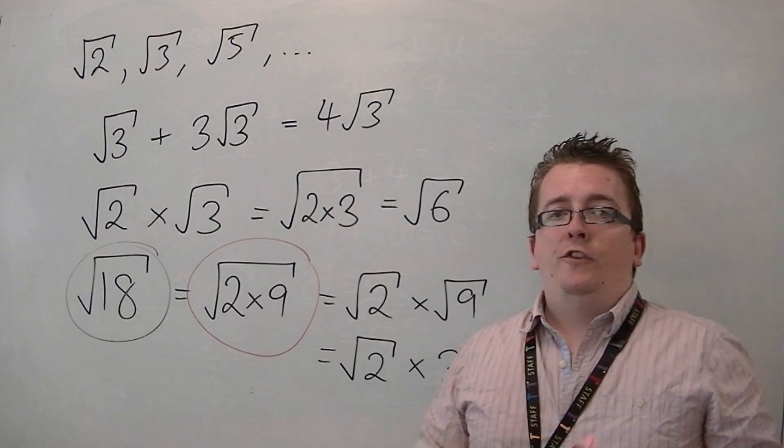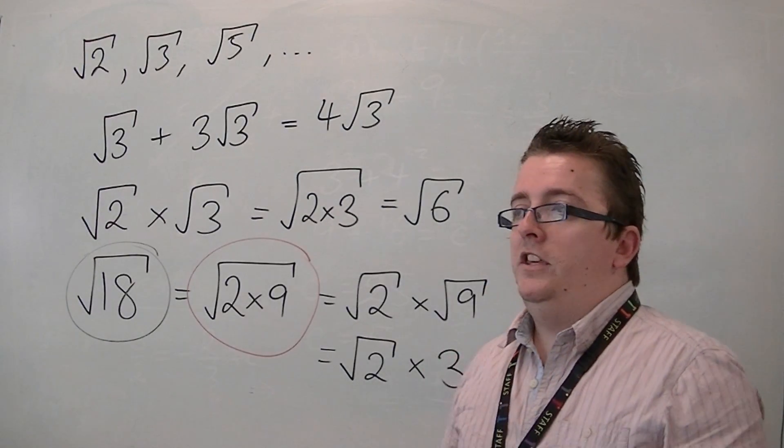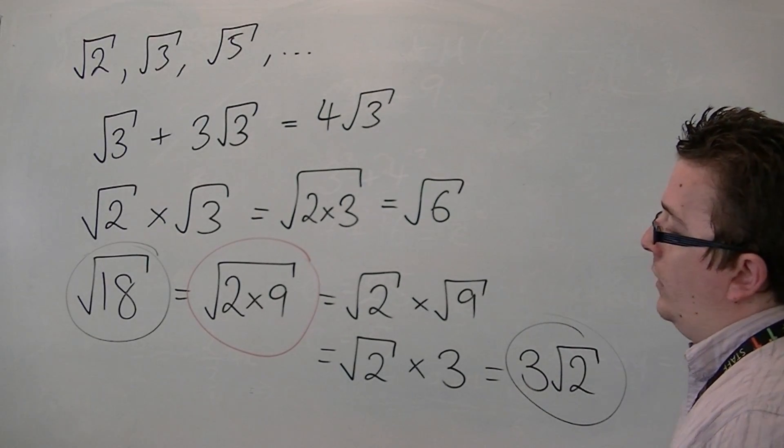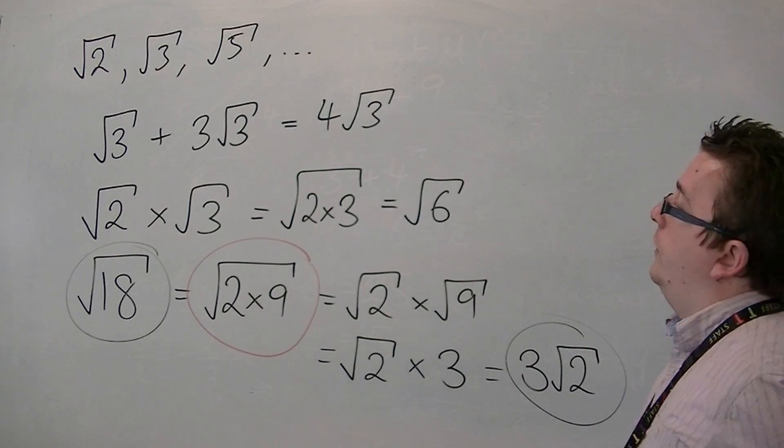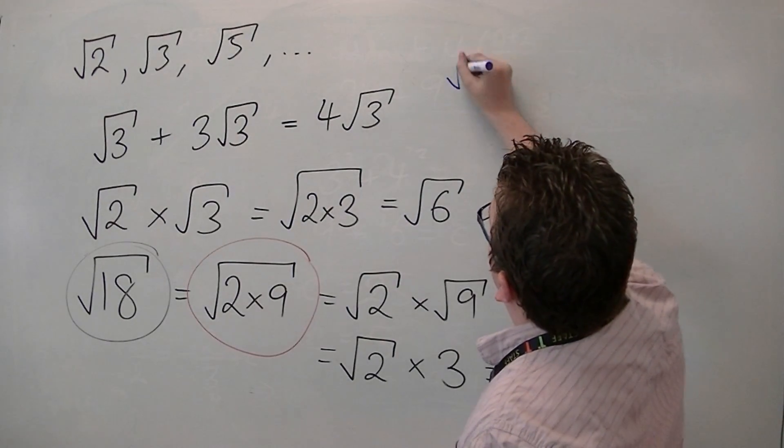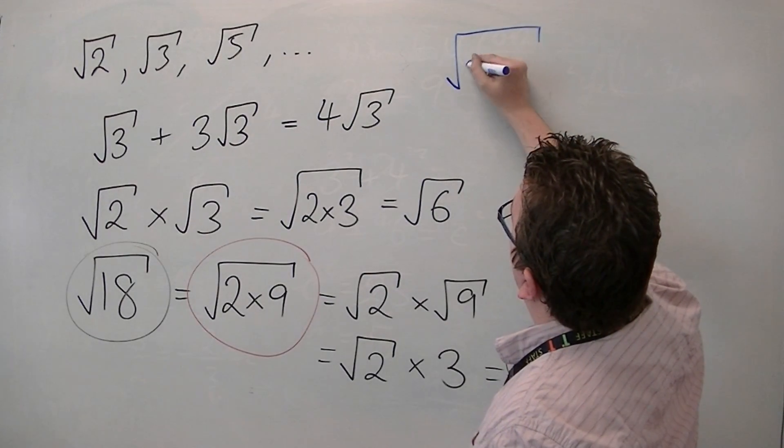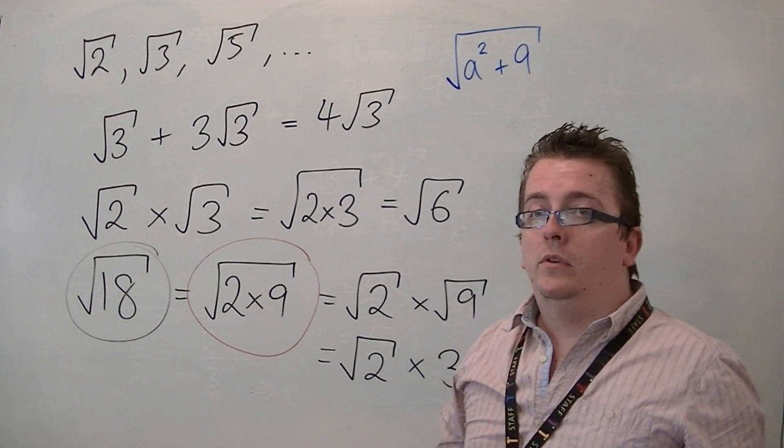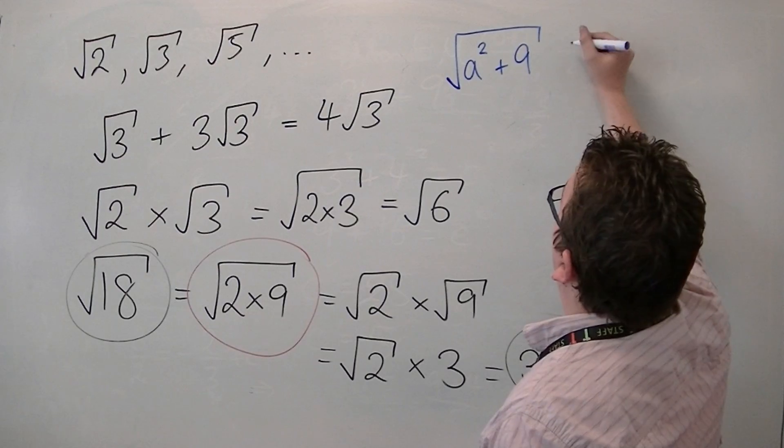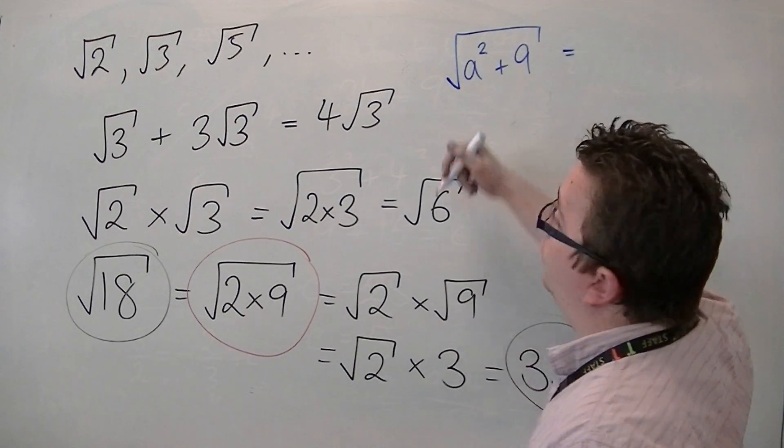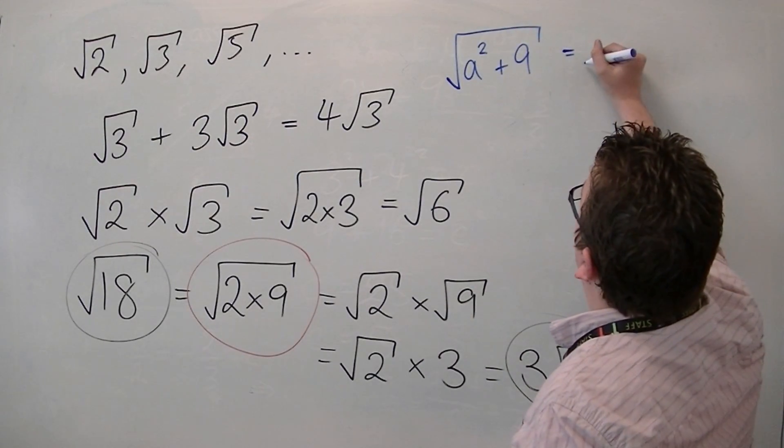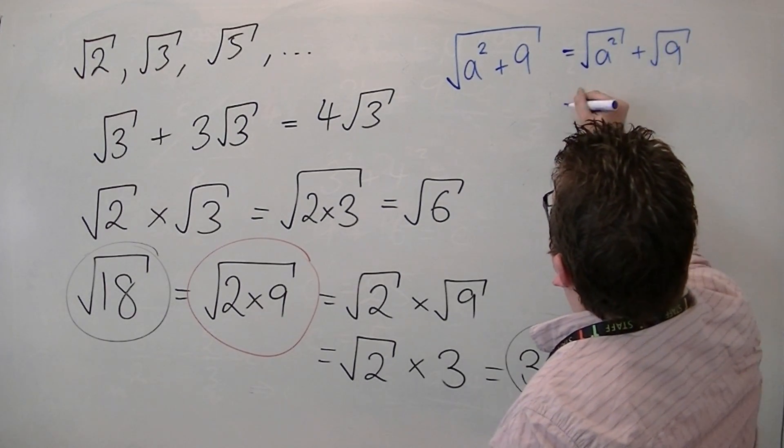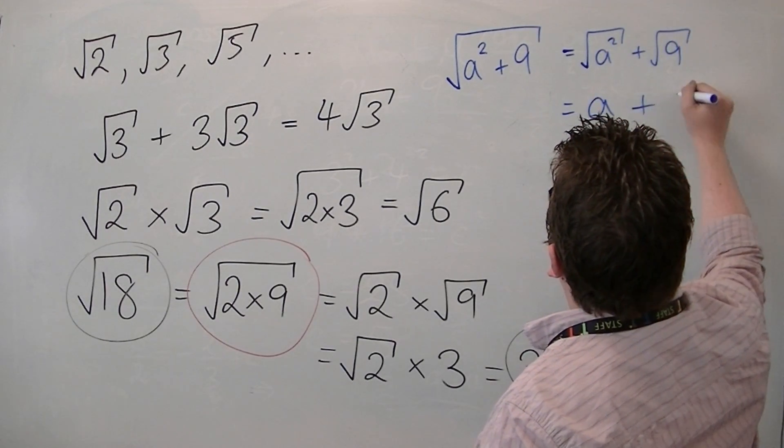Just to make sure that you are fully aware of other things that you can't do, for example, you can't do things like if you have the square root of a squared plus 9. You are unable to split this square root into the square root of a squared plus the square root of 9. So this is not the same as a plus 3.